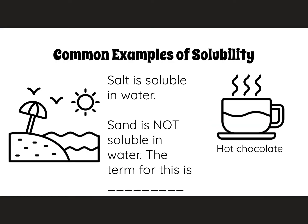You might be more familiar with solubility than you think. Here are two common examples. The first happens at the beach. Salt and sand have different properties. Salt is soluble in water. So, for instance, when you are in the ocean — if you've ever been to the ocean — you know that there's salt in there because it tastes salty. And if you get it in your eyes, it burns. But we can't really see the salt. But it's there. So salt is soluble in water.